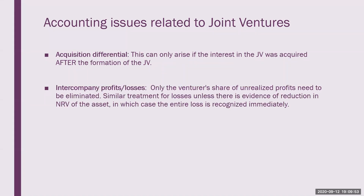Another accounting issue related to joint ventures is intercompany profits and losses, and this is treated in a manner similar to that for investments in associates. Only the venturer's share of unrealized profits or losses needs to be eliminated, with similar treatment for losses unless there is evidence of reduction in the net realizable value of the asset, in which case the entire loss is recognized immediately as indicative of an impairment.